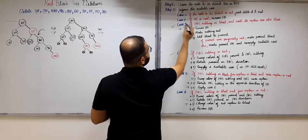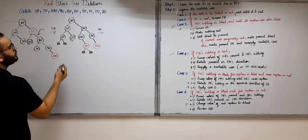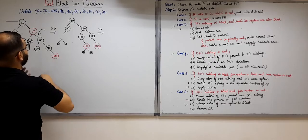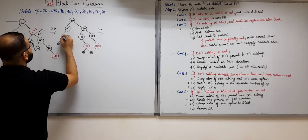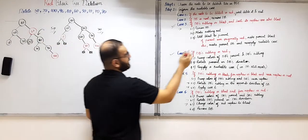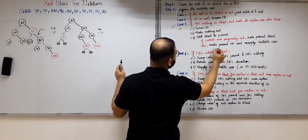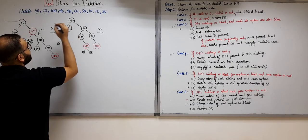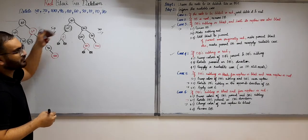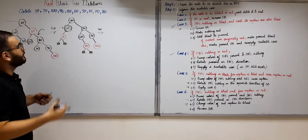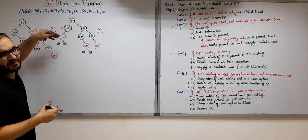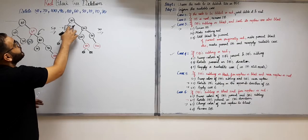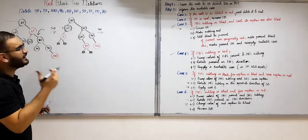The sibling of this double black node is 10, which is black, and both nephews are also black. So this is again Case 3. We remove double black, make the sibling 10 red, and add black to the parent. But the parent is originally black, so in the else case we make it double black. Now we have a new double black that needs to be resolved — it has percolated up a level.